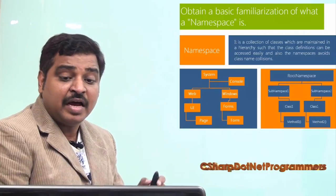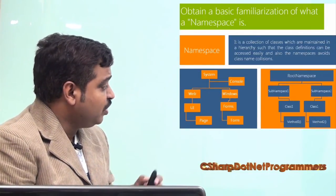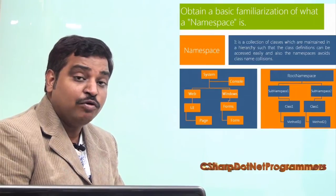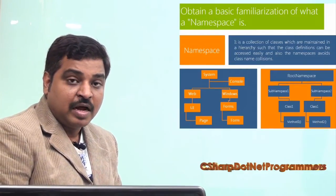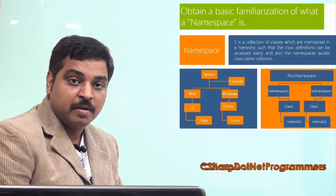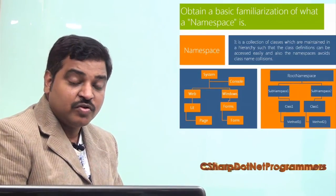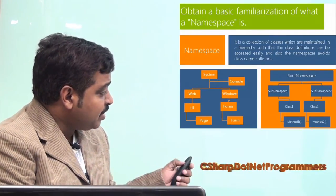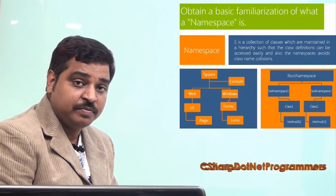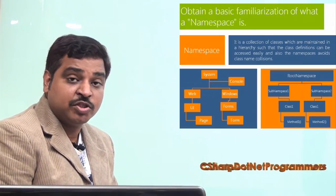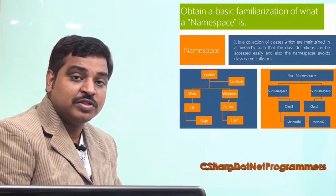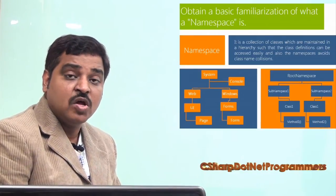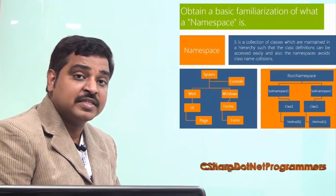For example, if I need a class named Class1 with two different methods — Method1 and Method2 — I cannot maintain both classes at the same level. So with the support of namespaces, we can maintain two different hierarchies: a root namespace with a sub-namespace containing Class1, and another root namespace sub-namespace 2 with another Class1. Users can then use different hierarchies like RootNamespace.SubNamespace1.Class1 to access Method1, and RootNamespace.SubNamespace2 to access Method2.